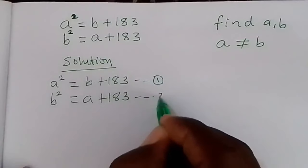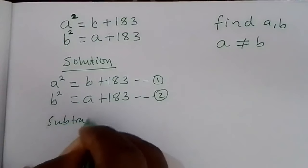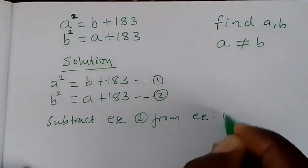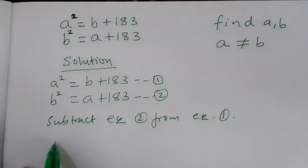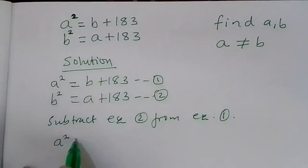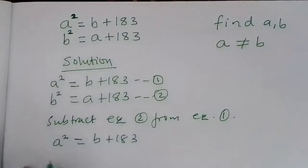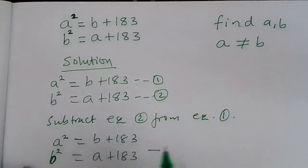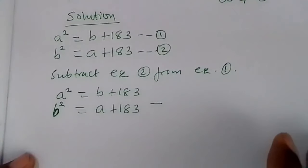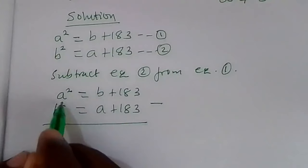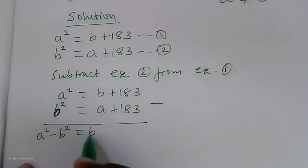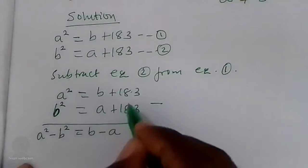Now subtract equation 2 from equation 1. We have a squared equals p plus 1/3, and p squared equals a plus 1/3. By subtraction, we have a squared minus p squared equals p minus a. The constant terms cancel because they are equal.